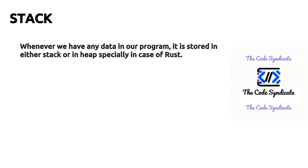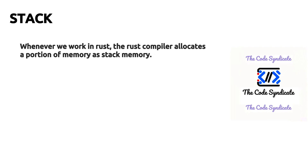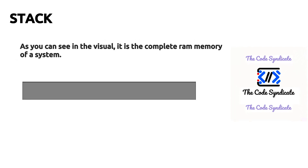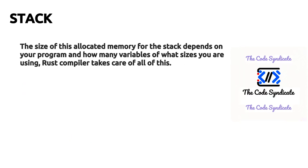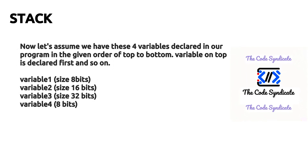Data is stored in either the stack or the heap. Especially in Rust, whenever we work in Rust the compiler allocates a portion of memory as stack memory. As you can see in the visual, this is a complete RAM memory of a system. We have a Rust program which has some data to work on that needs to be saved in memory. Rust allocates a portion of memory to be used as stack. The size of this allocated memory depends on your program and how many variables of what sizes you are using — the Rust compiler takes care of all of this.